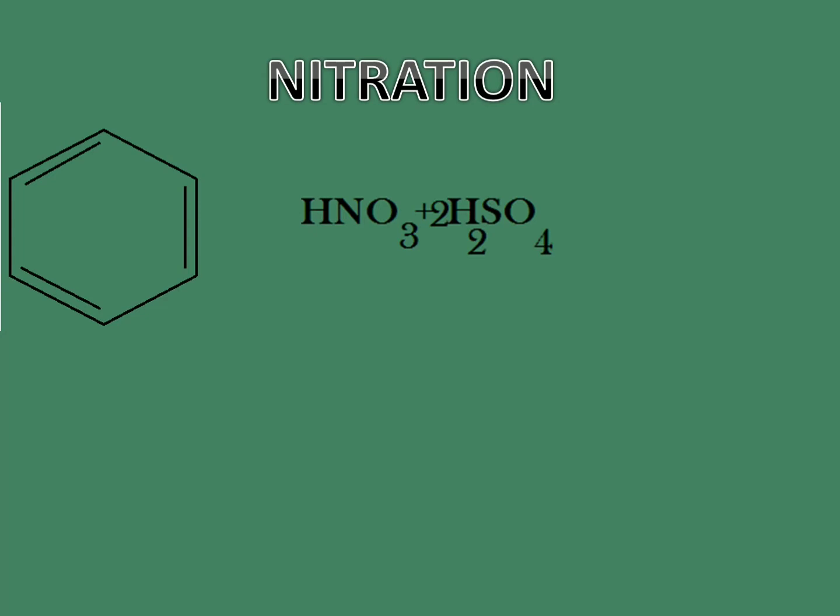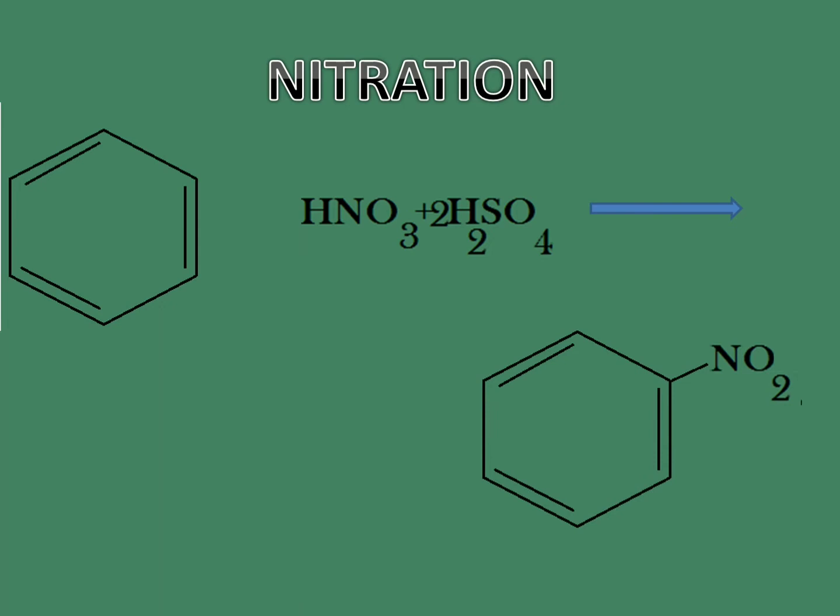The first example we are going to discuss is nitration. In nitration, benzene reacts with a nitrating mixture — which is a mixture of nitric acid and sulfuric acid — to get nitrobenzene as the product.